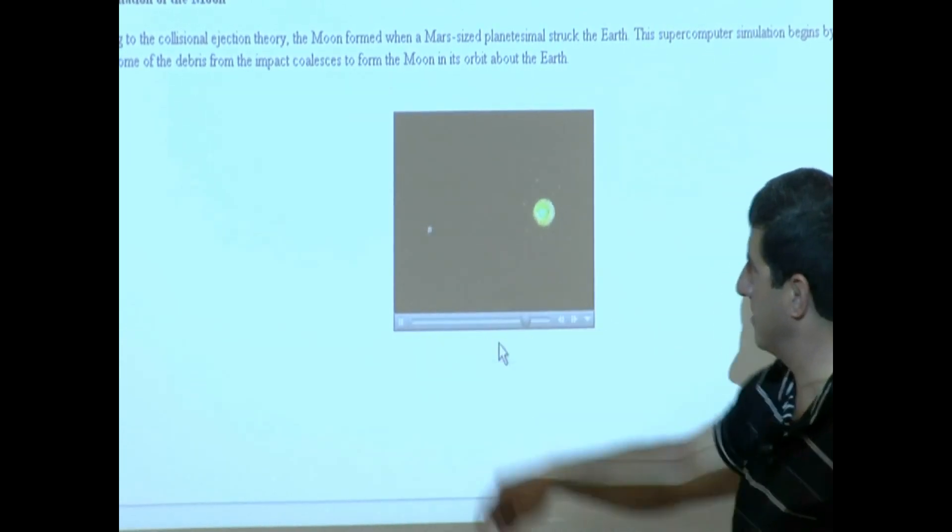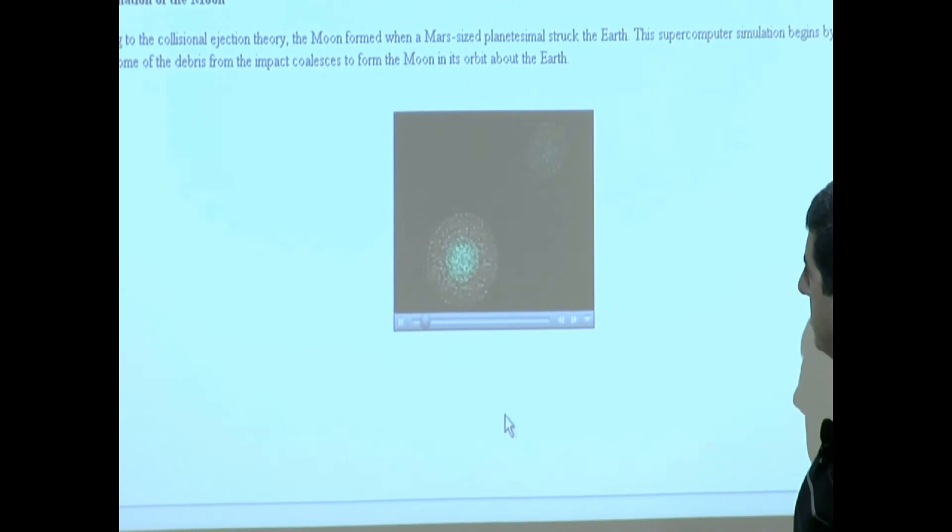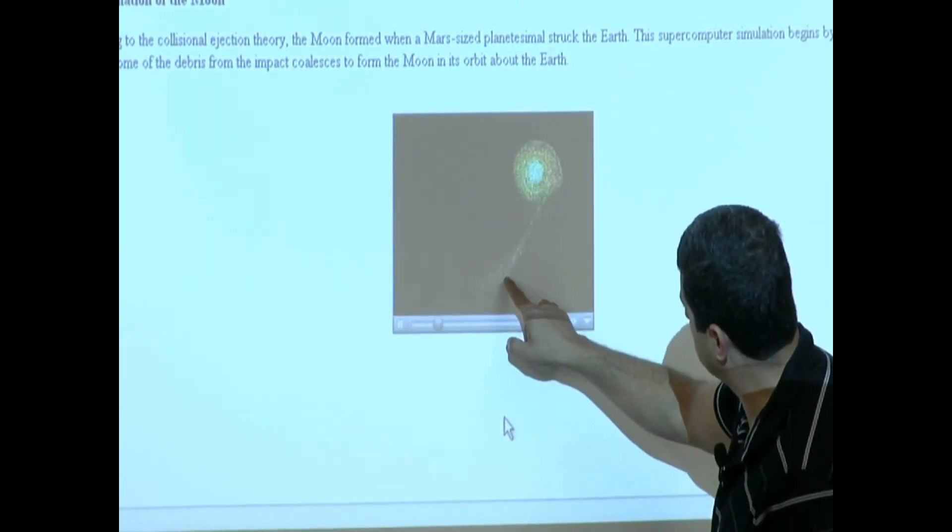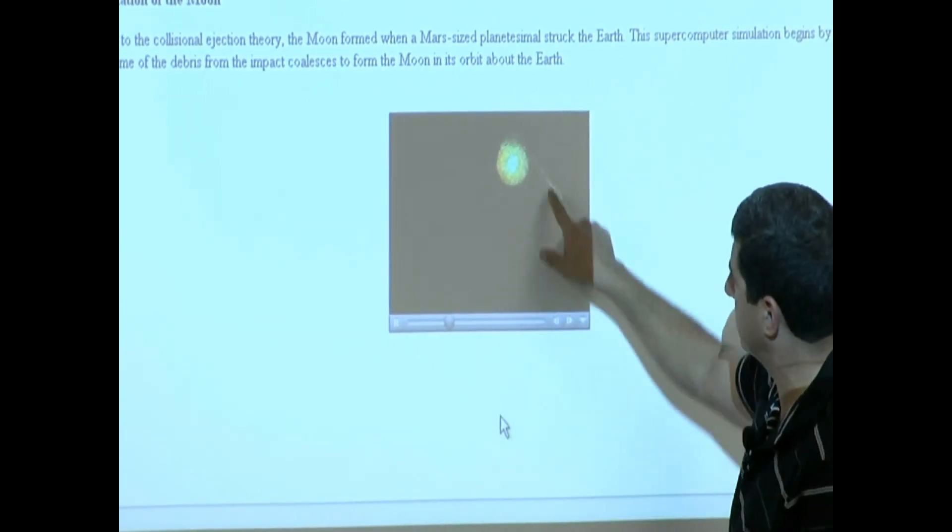Isn't that cool? Look at that. It became a moon. I like that so much. Okay, look how big the Earth is. Boom! Okay, now the outer part of the Earth comes out. The heavier part of the Earth, the iron, does not come out.